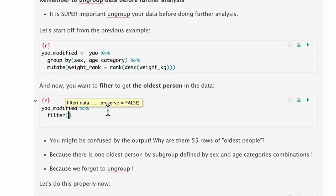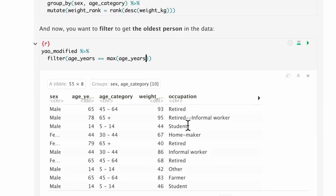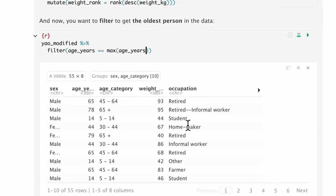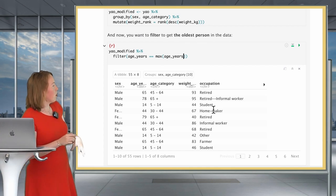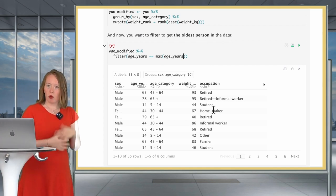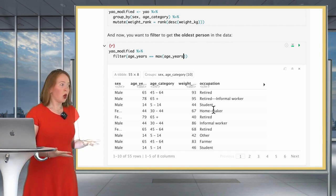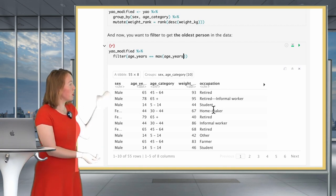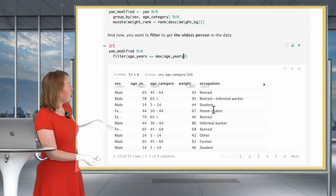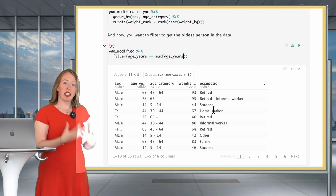Well, we would usually do this very tranquilly. We would do filter(age_years == max(age_years)). When we run this, uh oh, we don't actually just get the oldest person in the entire data frame. We still get the oldest person based on each of the groups and categories that we have created. So we get the oldest person for each combination of gender and age categories.